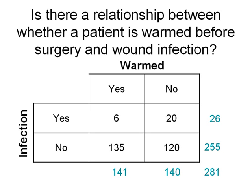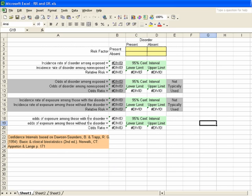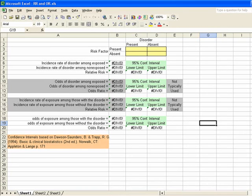We'll look at whether or not a person is warmed as being the risk factor and infection as being the disorder. So it's the same data we had last time. We'll open up the odds ratio and relative risk spreadsheet, and there are four yellow cells labeled present/present, present/absent, absent/present, and absent/absent, and we'll put our data in those four cells.